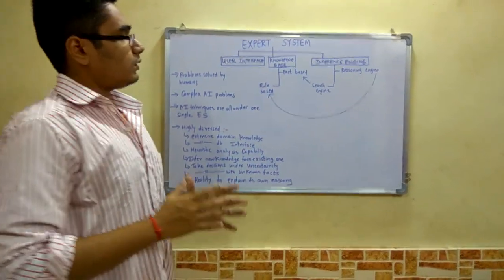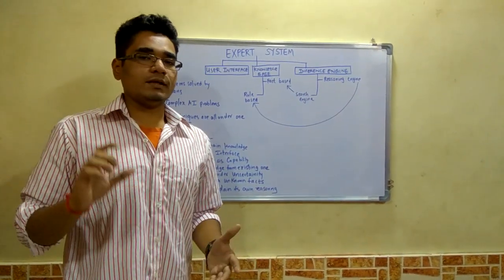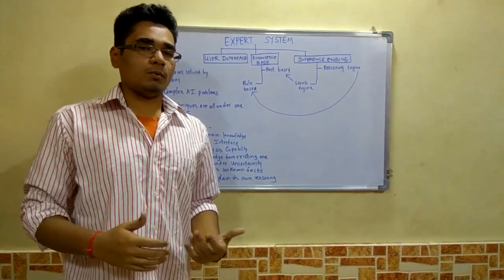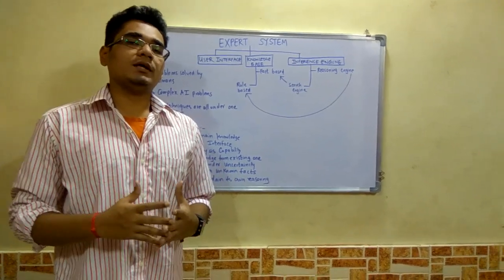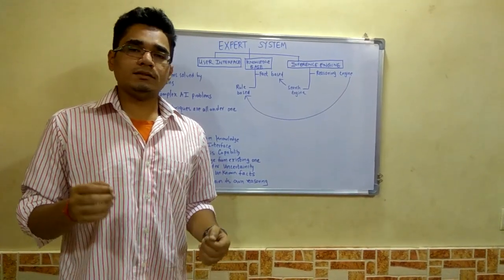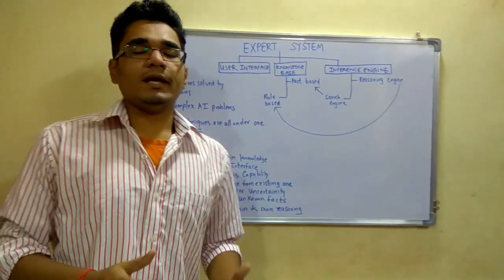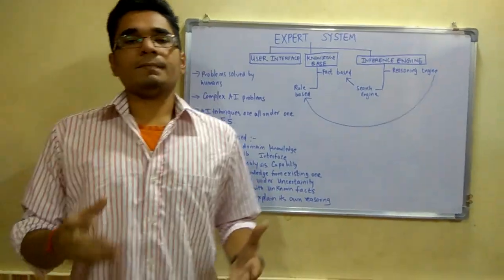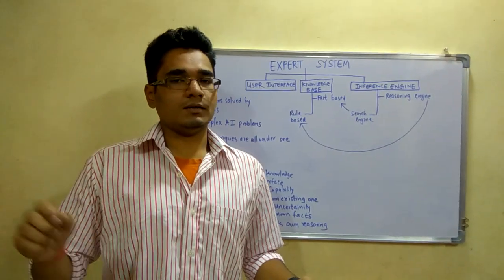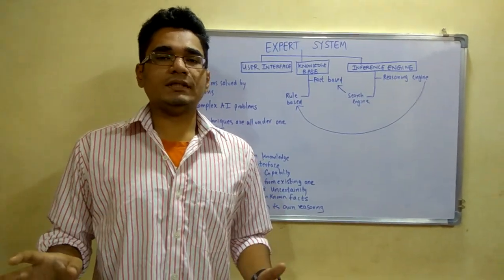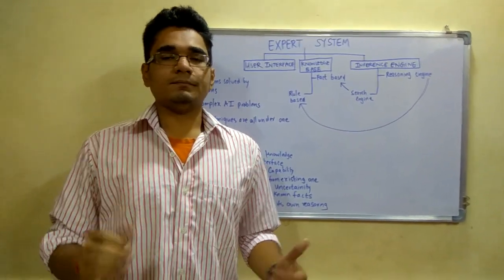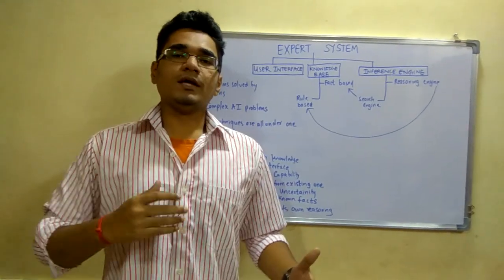Second is the rule base, which is a set of rules for solving a particular problem. For example, if an AI agent is driving a car, first it should put it in first gear, then it should give the clutch and then start moving.